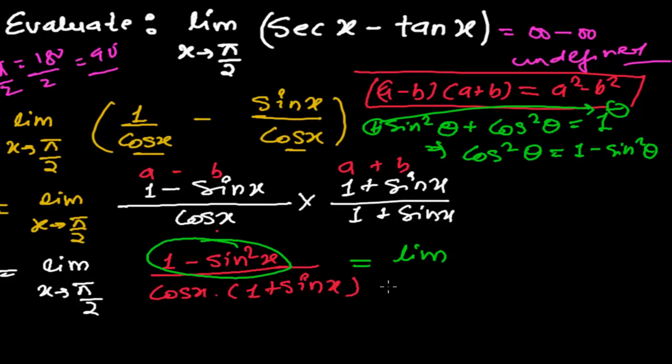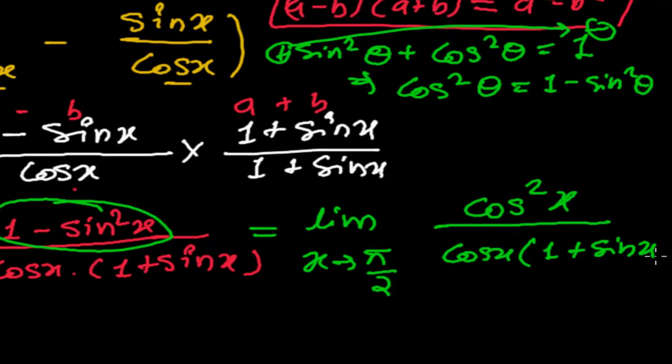So it will be limit when x tends to π/2. It will be now cos square x whole divided by cos x times 1 plus sin x. So now again here, this is cos square x. Means there are 2 cos x multiplying each other, cos x times cos x. So I can cut this cos x, this with this cos x.